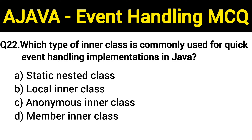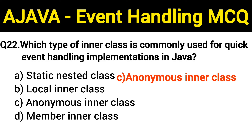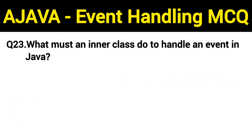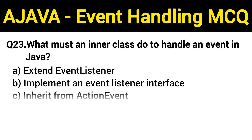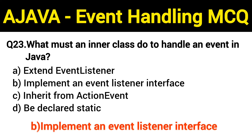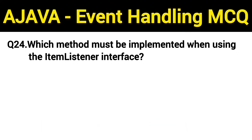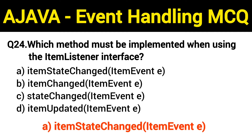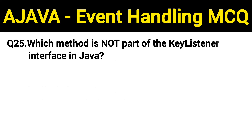Question number 22: which type of inner class is commonly used for quick event handling implementations in Java? The right answer is option C: anonymous inner class. Question number 23: what must an inner class do to handle an event in Java? The right answer is option B: implement an event listener interface. Question number 24: which method must be implemented when using the ItemListener interface? The right answer is option A: itemStateChanged(ItemEvent) method.